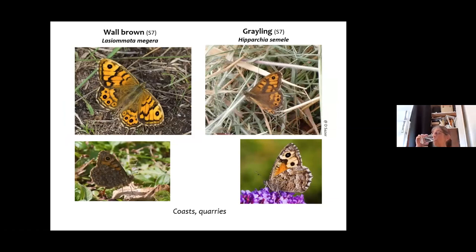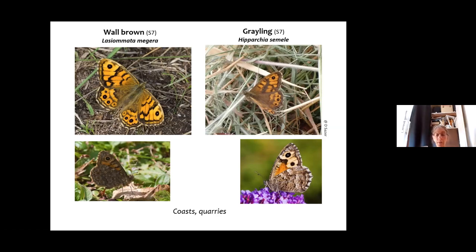The less common browns: wall brown used to be a wider countryside butterfly, but they've really declined so they're now pretty much only found on our coasts or in places like quarries — really warm, open habitats. We definitely do have them on our South Wales coasts. They can be hard to identify unless they actually stop. They both have orange wings with dark markings and very dark veins. The grayling has brown fringes; the wall brown has ringed spots on the underside, so if they stop you can tell them apart pretty clearly.